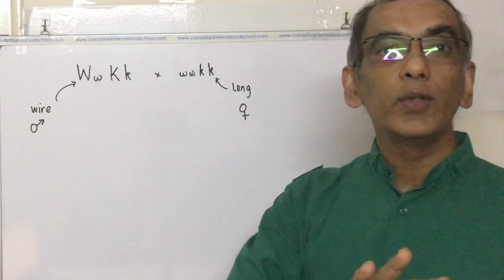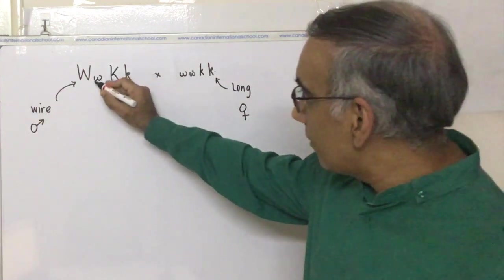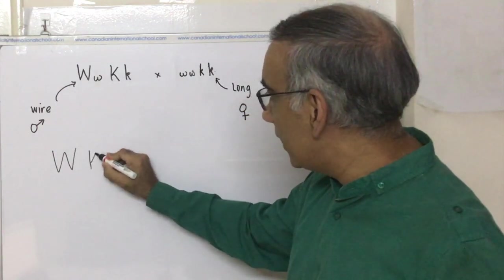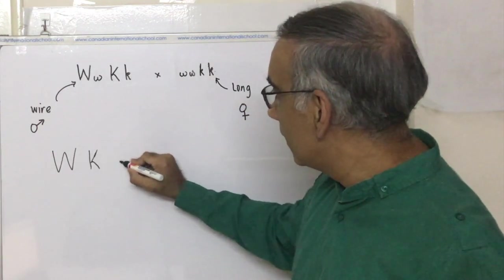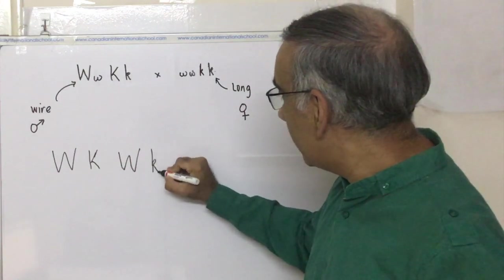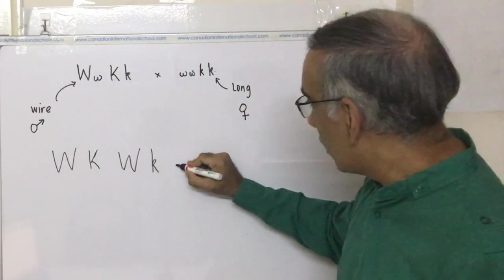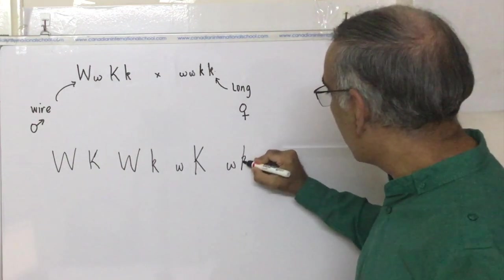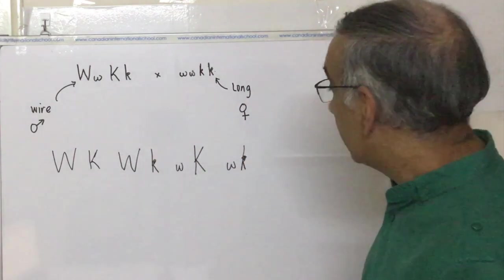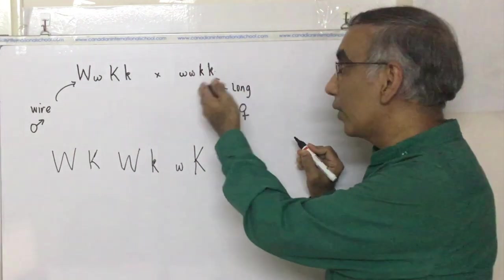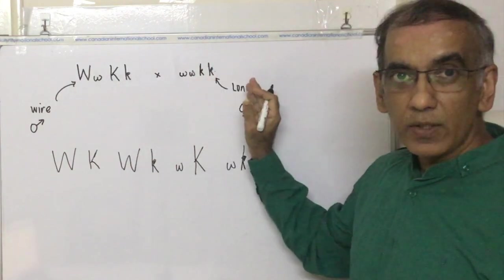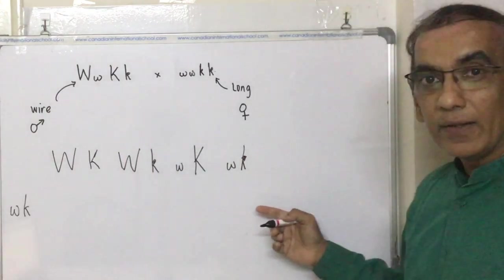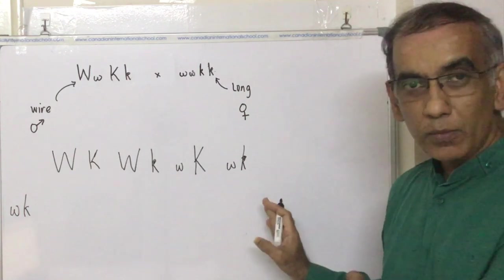Again, we need to lay out, and this time, no need for a full 16 squares. We establish the four gametes here: big W big K, big W little K, small W big K, and small W small K. And there's only going to be one possible gamete here with this double homozygous genotype: small W, small K. Then you can go across and look at the various genotypes.